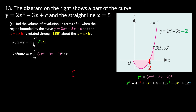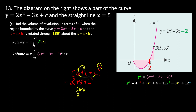To expand (a + b + c)², we get a² + b² + c² plus cross terms. Squaring (2x² - 3x - 2): first the squared terms give 4x⁴ + 9x² + 4. Then the cross term 2(2x²)(-3x) = -12x³.